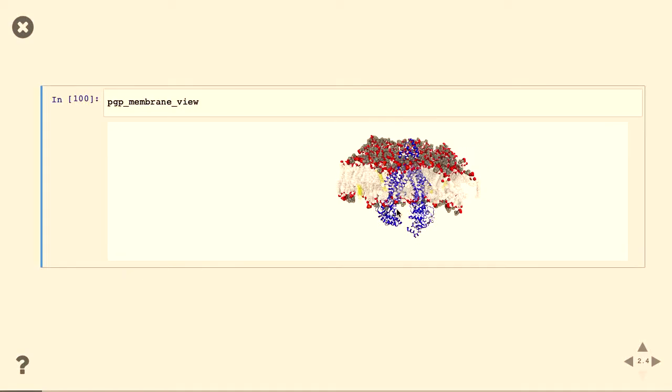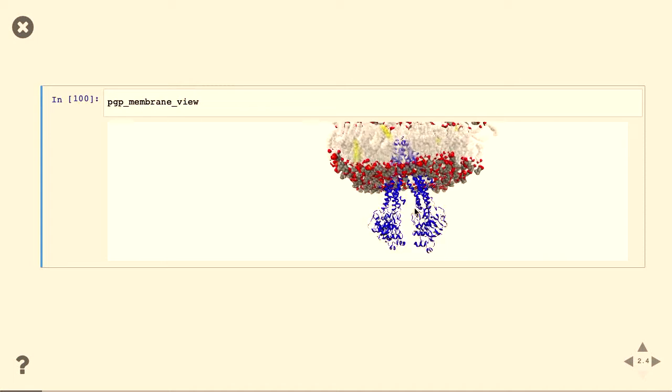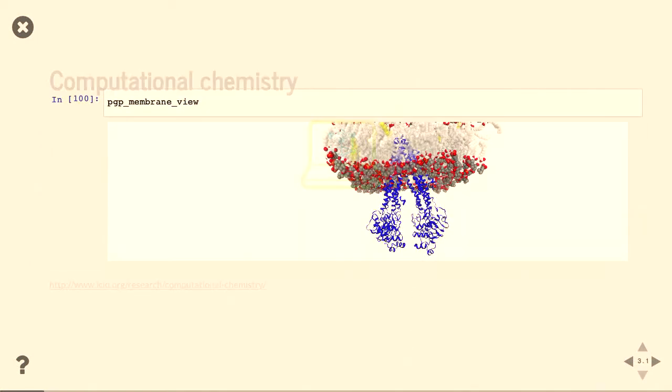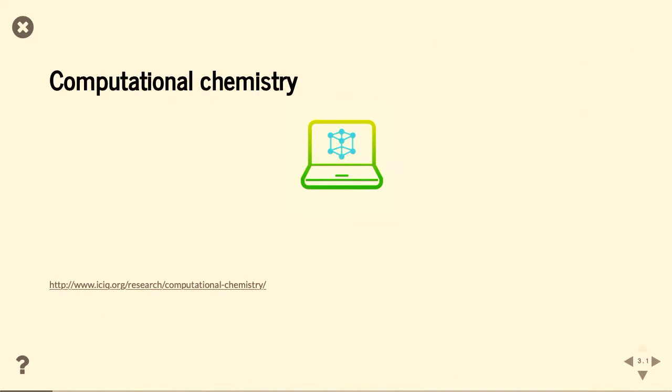Right, so we have this amazing structure that experimental chemists have given us, but the problem with this structure, even though we can see quite finely what is happening, what it looks like, is that we can't see how it moves. And so this is where computational chemistry comes in. So computational chemistry, I tried really hard to think of a way to explain it, but honestly, it's just using computers to answer chemical questions.